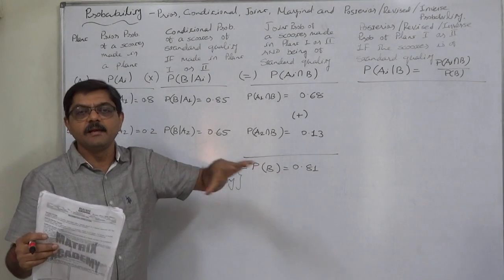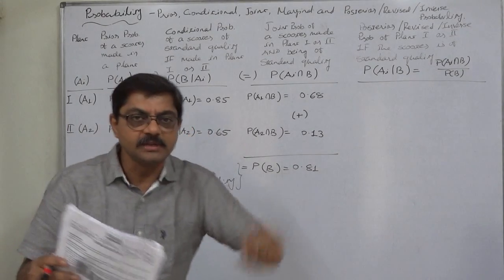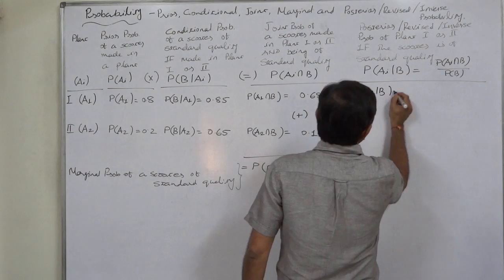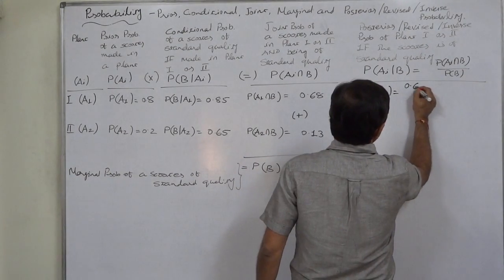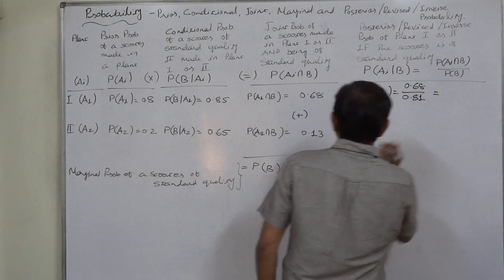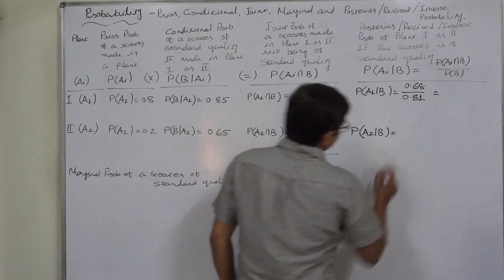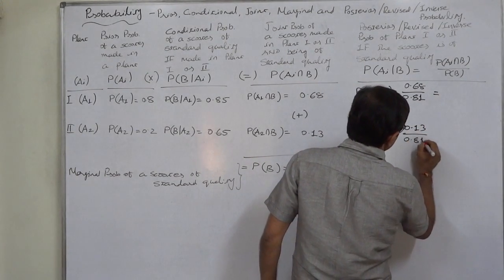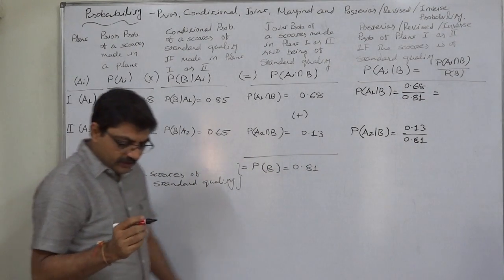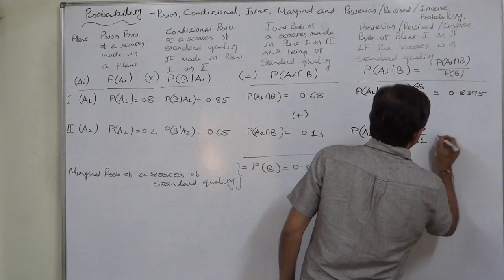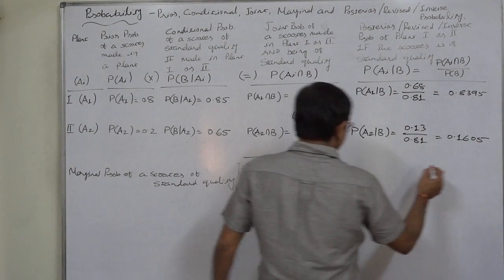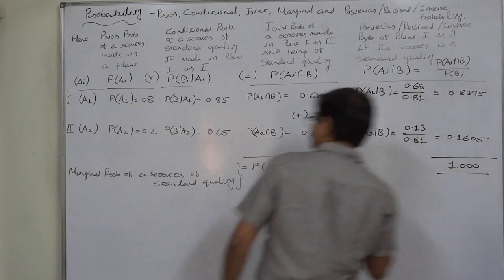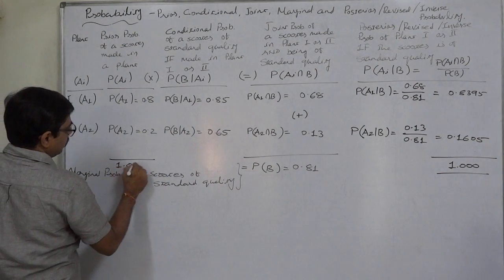We know a scooter selected at random is of standard quality. What is the probability it came from plant one? That is P(A1|B) = P(A1 ∩ B) / P(B) = 0.68 / 0.81. Similarly, P(A2|B) = P(A2 ∩ B) / P(B) = 0.13 / 0.81. The simplification of these two gives 0.8395 and 0.1605. The summation of posterior probabilities must equal one — this serves as a point of verification.